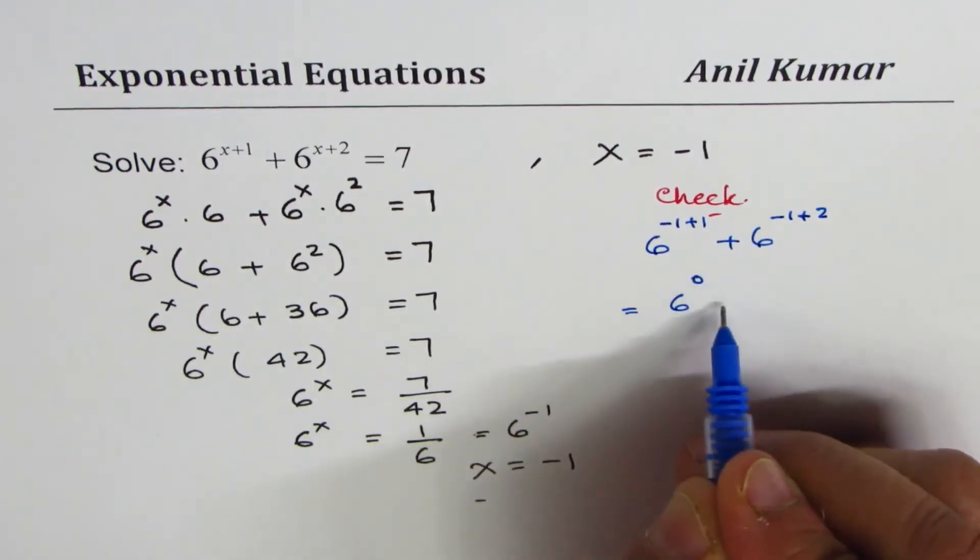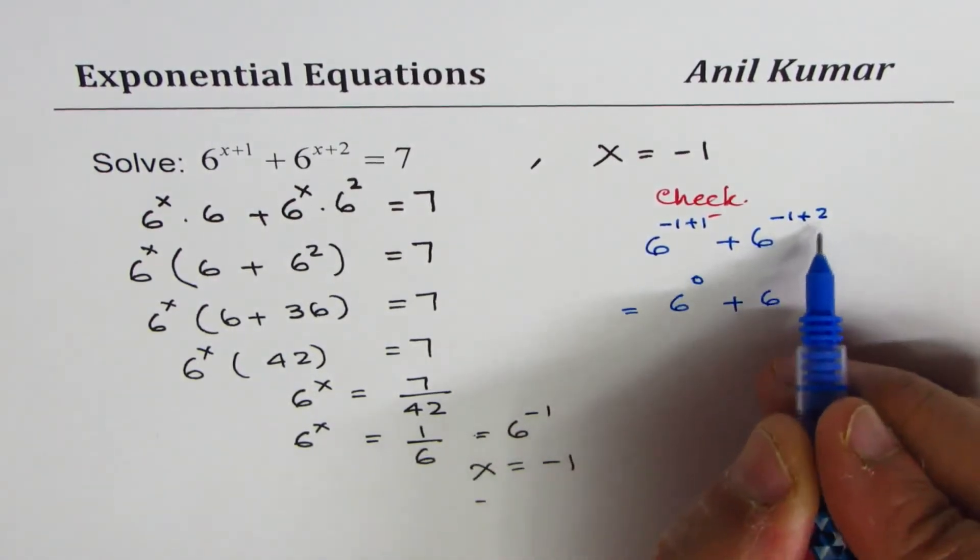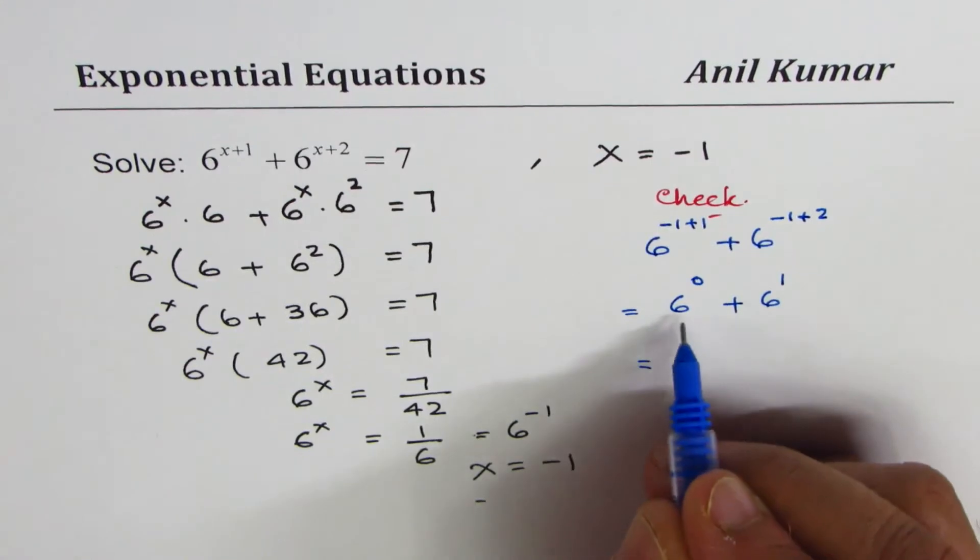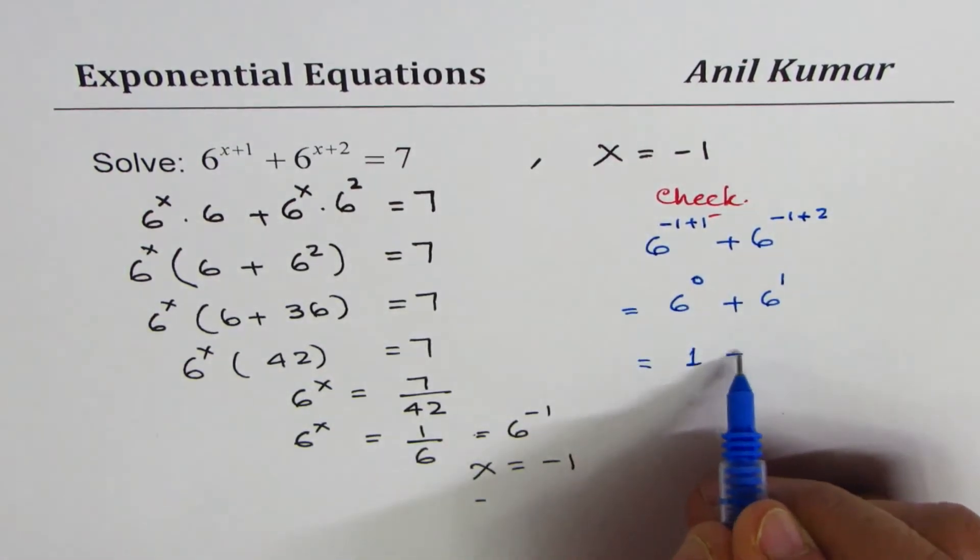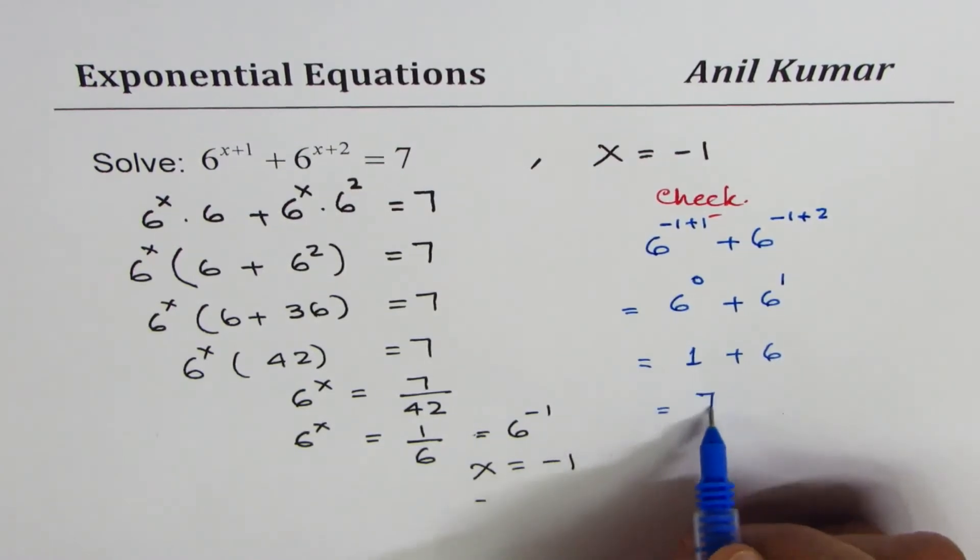This equals 6^0 + 6^1. Since 6^0 = 1 and 6^1 = 6, we get 1 + 6 = 7, which equals the right side. The solution is verified.